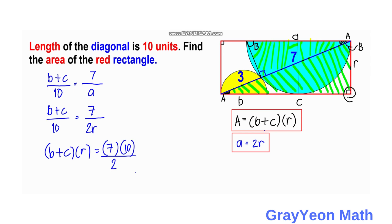Because we need this B plus C times R, and we can actually replace this as the area. Because earlier we have area equals B plus C times R. So it equals 7 times 10 over 2. So we'll just simply divide this 10 by 2, so we have 5. So we have 7 times 5 is 35 square units. And that is our answer.